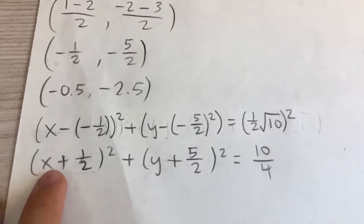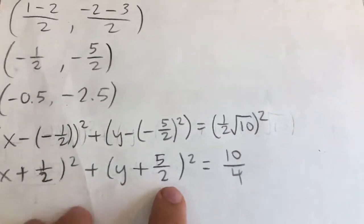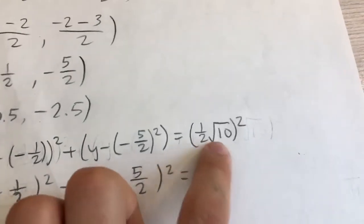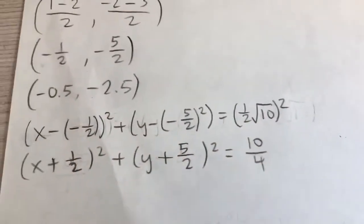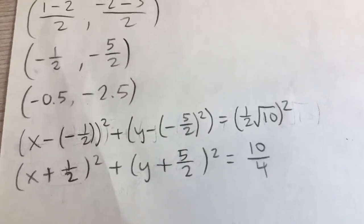And we can simplify and get (x + 1/2)² + (y + 5/2)² equals, and if you evaluate this squared, you'll get 10/4. And so that is our final answer.